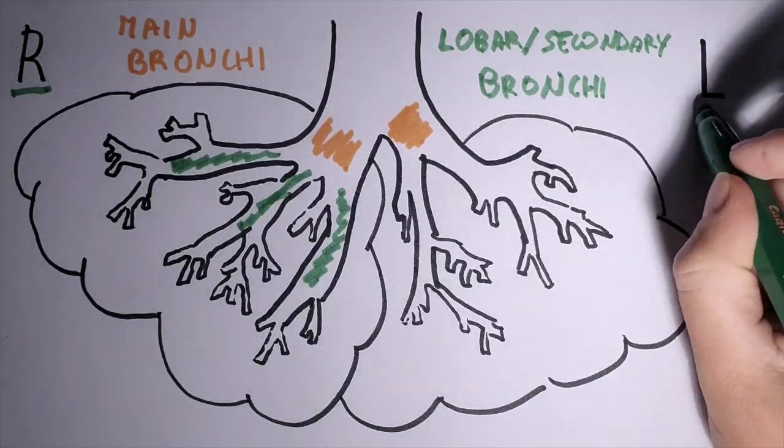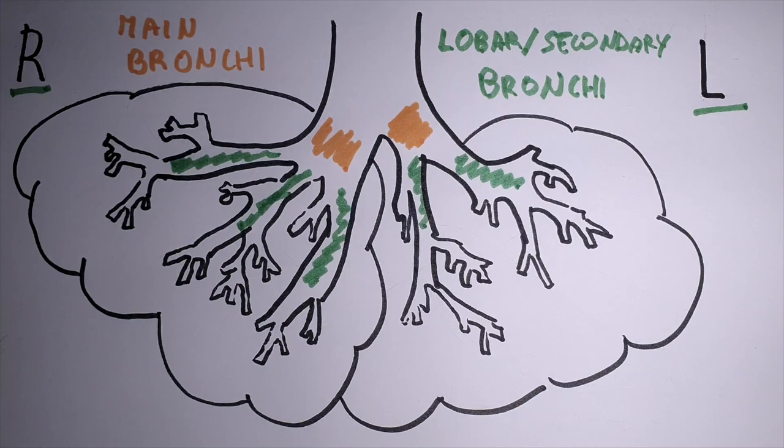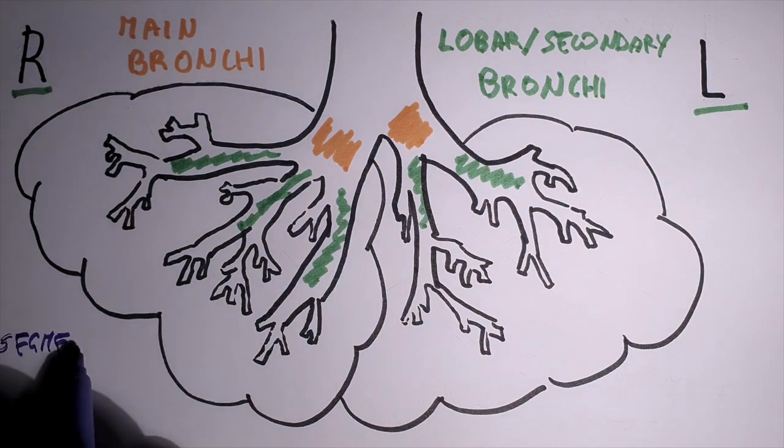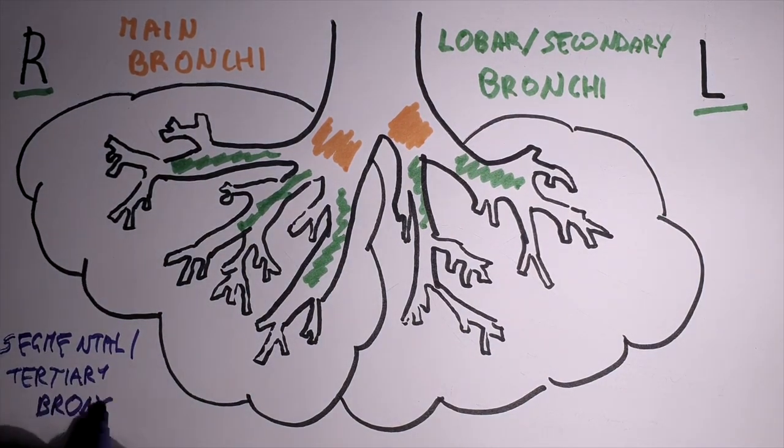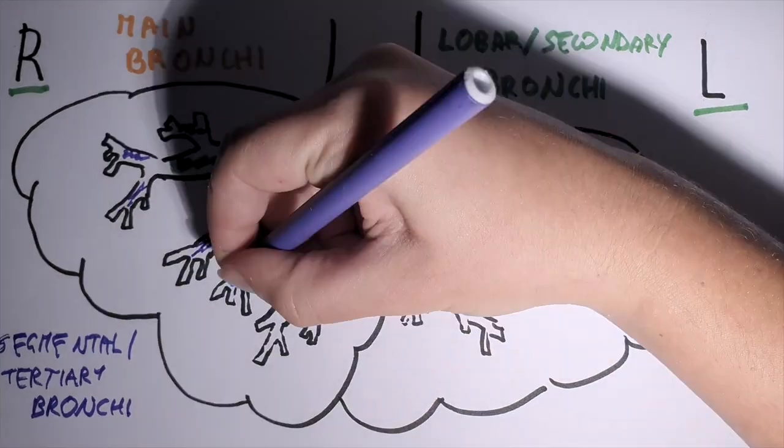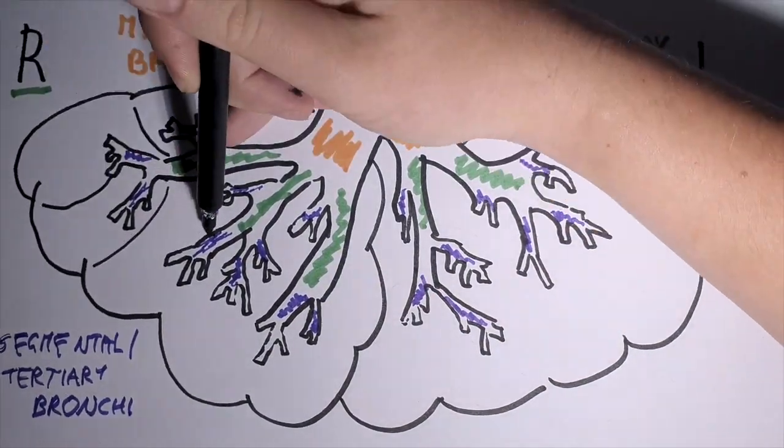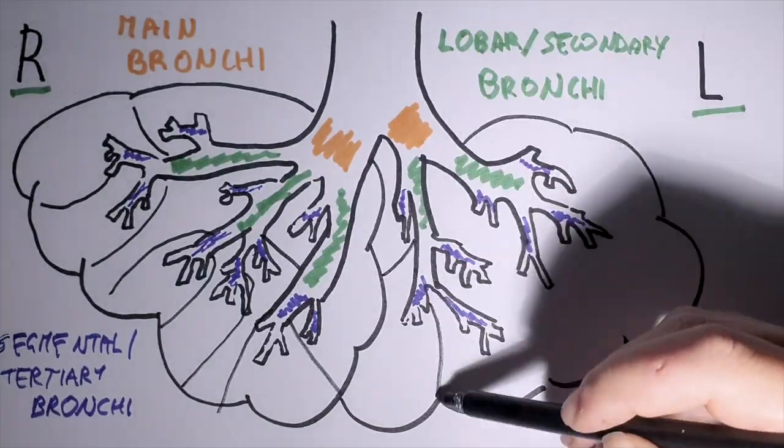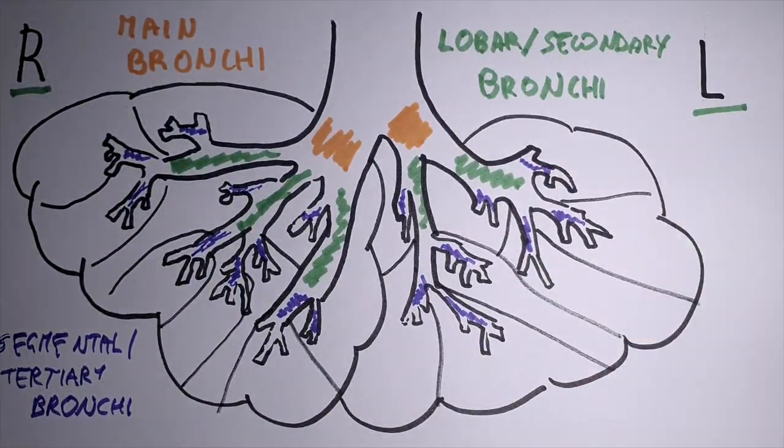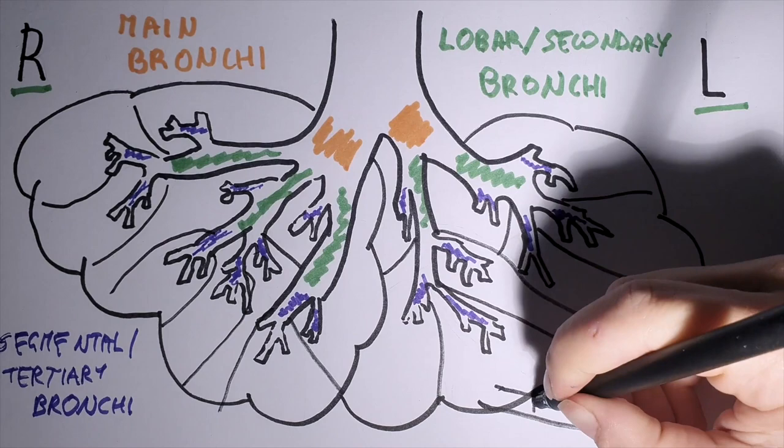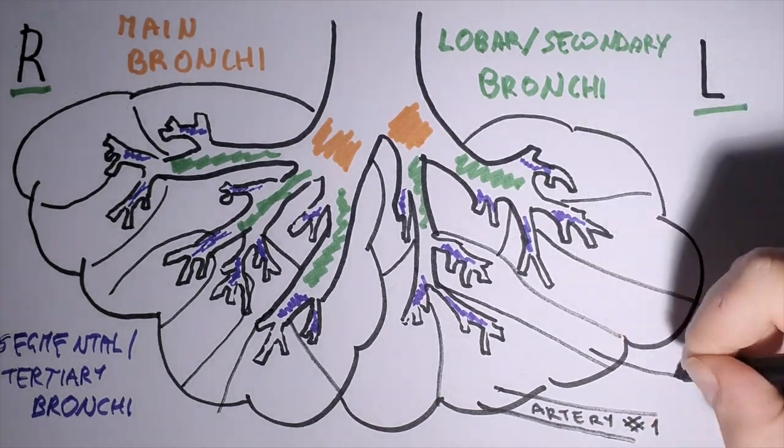These secondary branches establish the lobes of the right and the left lung. Then we have a third ramification from the lobar bronchi, they're also called segmental bronchi as they form specific zones or pulmonary segments in the lung parenchyma. From a clinical point of view, this is very important as each one is independent in their blood supply.